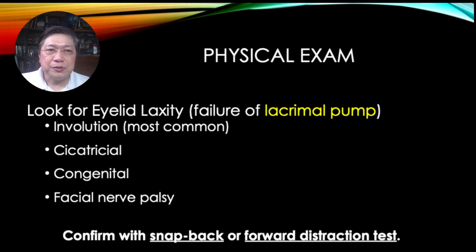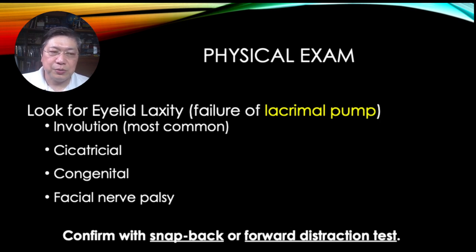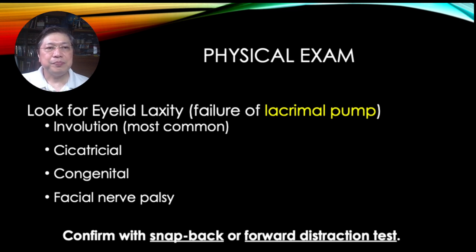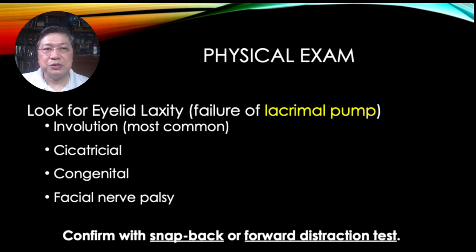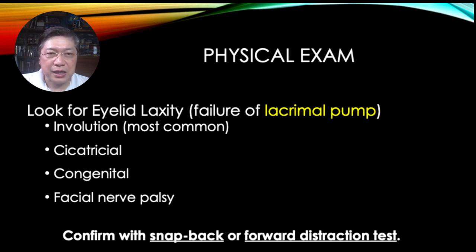Look for eyelid laxity — there may be no injury, but is it functioning well? If it slacks, you have a failure of the lacrimal pump. The most common cause would be age or involution, but it can also be cicatricial — from contractions due to injury, illness, congenital problems, or facial nerve palsy. To confirm eyelid laxity, you do a snapback or a forward distraction test. A snapback is pulling down the lower lid, then releasing it and counting the seconds until it returns to primary position.